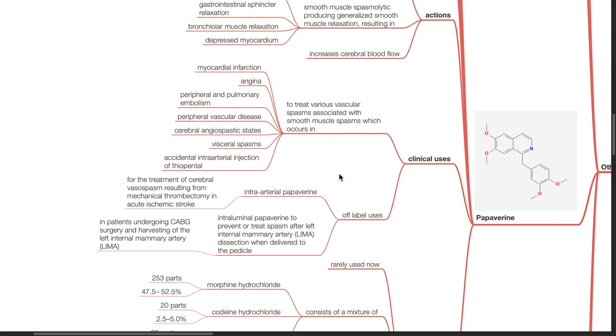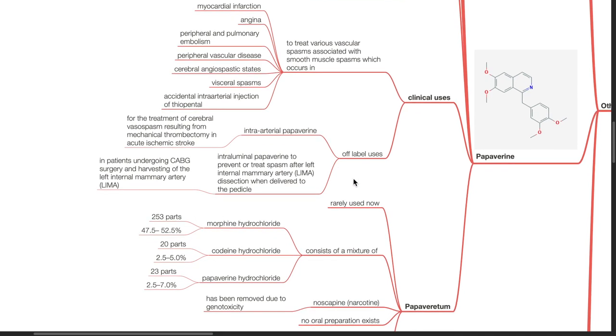Off-label uses includes intra-arterial papaverine for treatment of cerebral vessel spasm resulting from mechanical thrombectomy in acute ischemic stroke. In patients undergoing CABG surgery, intraluminal papaverine has been used to prevent or treat spasm after left internal mammary artery dissection when delivered to the pedicle.